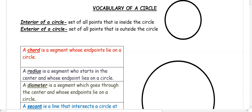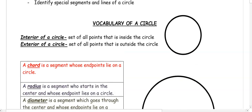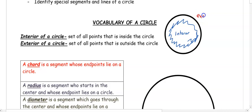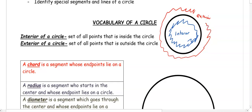To start with, a circle is just this dark black solid line. When we're looking at a circle, we have an interior and an exterior. The interior is everything that's going to be inside that line, and the exterior of the circle is going to be everything outside the black line. So the circle itself is just that black line.